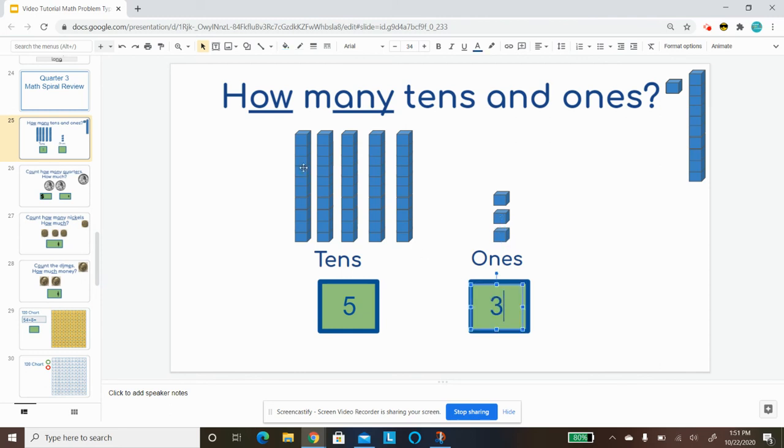Well, five tens, if you count by fives, is 10, 20, 30, 40, 50, 51, 52, 53. So this shows 53.